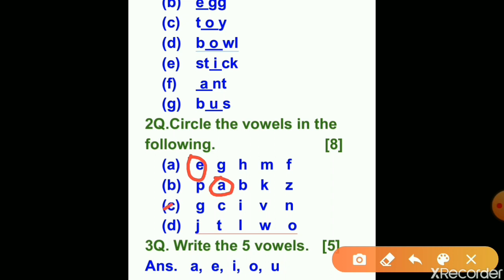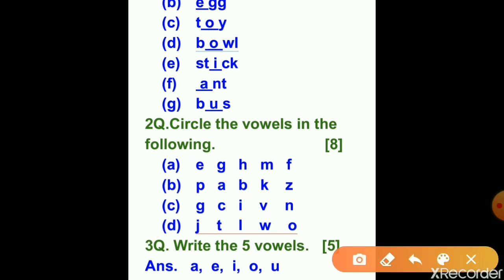In part C: G, C, I, V, N — I is the vowel. In part D: J, T, L, W, O — O is the vowel. Now question number three: write the five vowels — A, E, I, O, U. These are the five vowels.